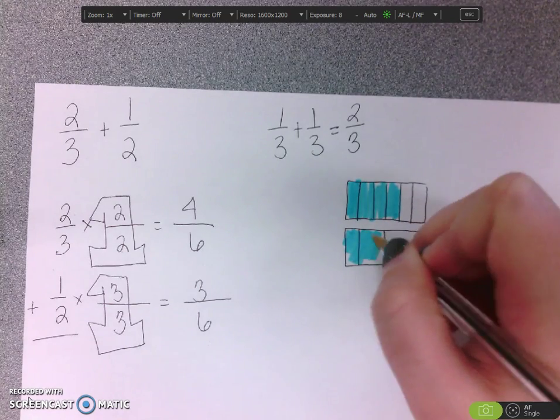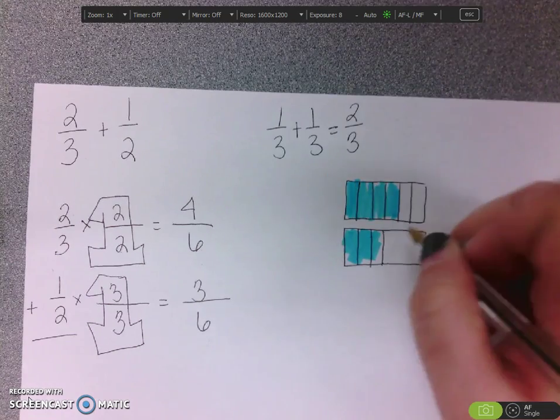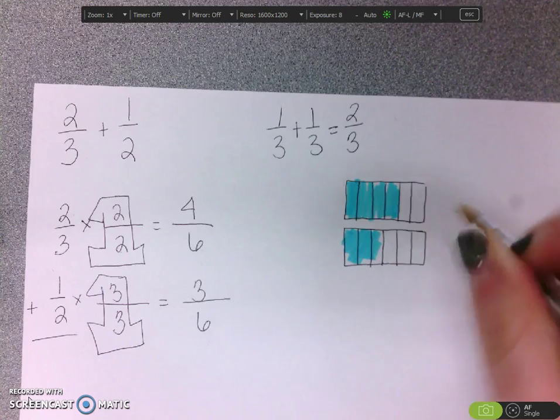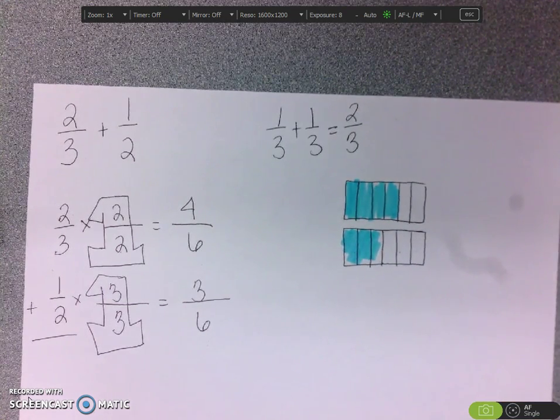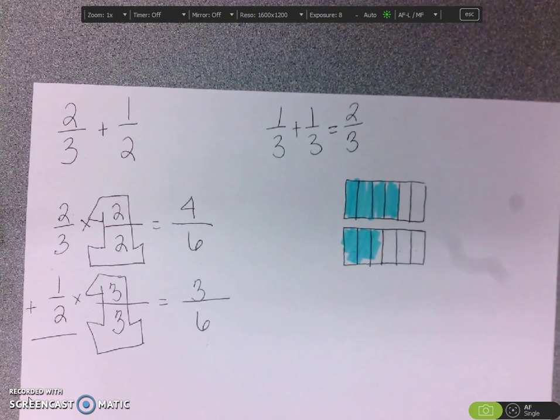We can see that right here. One, two, three, out of one, two, three, four, five, six. I didn't change how much was colored in. I just changed how many slices it had.